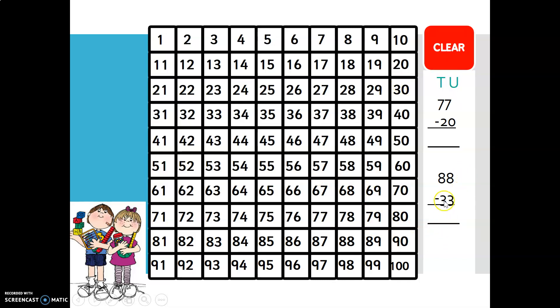Looking at the next equation, 88 minus 33. So let's break 33 into 10s and units. There are three 10s and three units. Again, we know that moving up a row, we are subtracting 10. There are three 10s, so we need to move up three rows. One, two, three. We get 58.